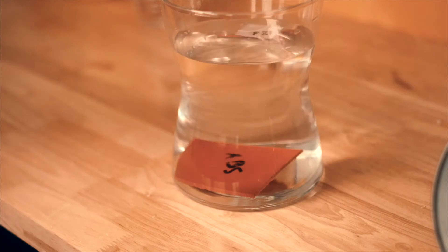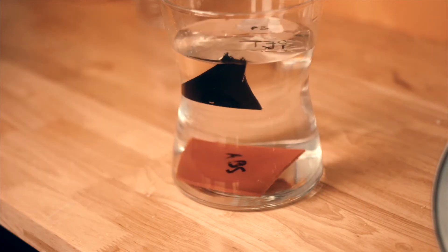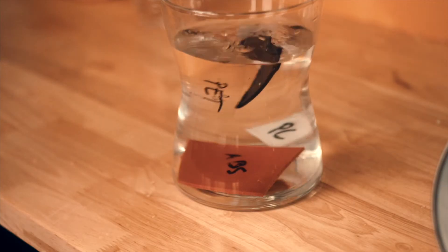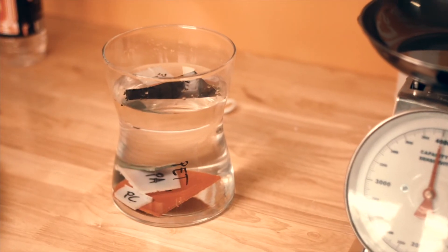You can try this for yourself with a simple water basin. More advanced sink float separation tanks can be used to actually separate different families of plastic.